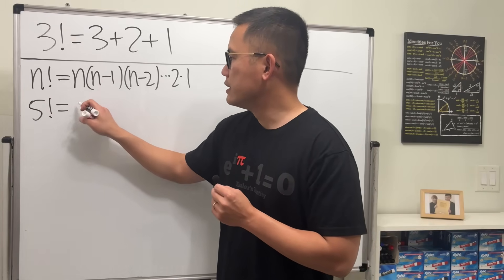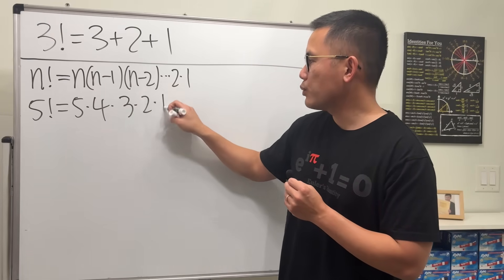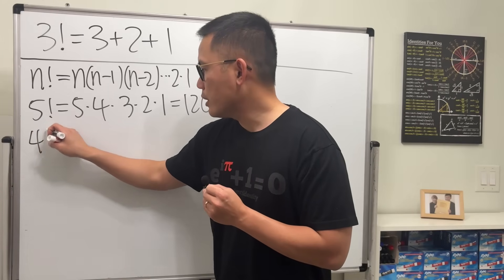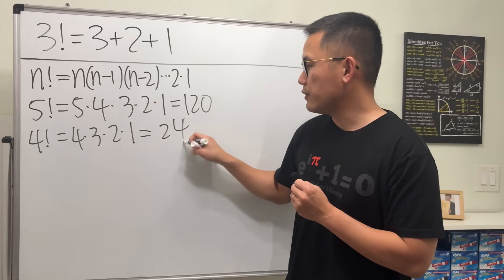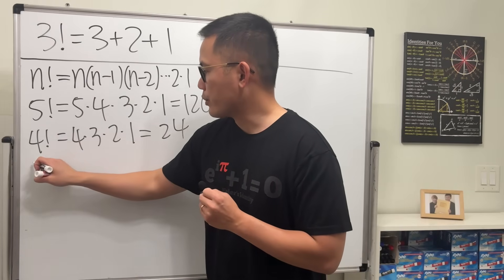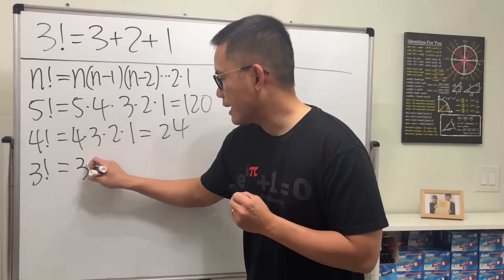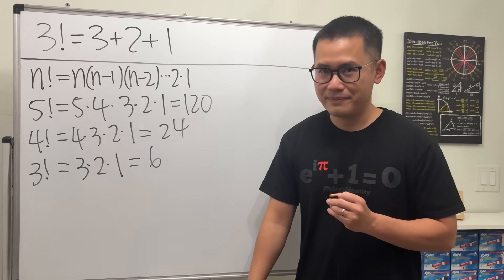5 factorial, this means 5 times 4 times 3 times 2 times 1. You can work that out, you'll get 120. 4 factorial means 4 times 3 times 2 times 1, and you'll get 24. And then 3 factorial, technically it should be 3 times 2 times 1, and if you work it out you get 6. But...